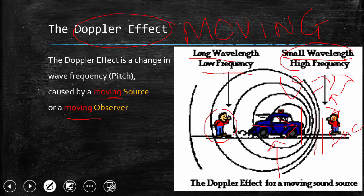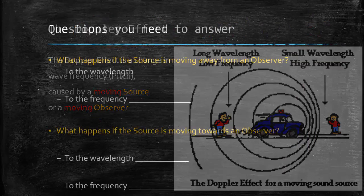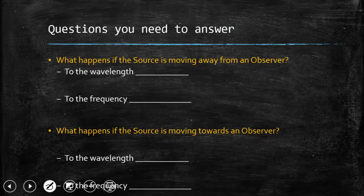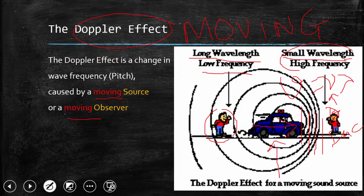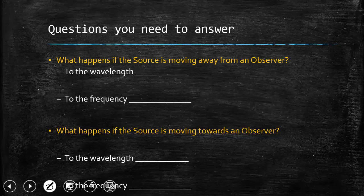Now, if you are understanding this diagram, you need to answer a few questions. What happens if the source is moving away from an observer? Say this is the source and it is moving away from this observer — what is happening to the wavelength? It increases. So what happens to the frequency? Using V equals frequency times lambda, if lambda is increased, the frequency decreases.